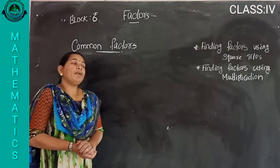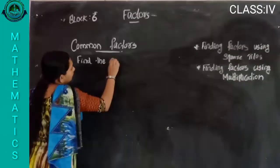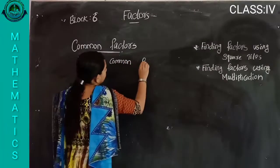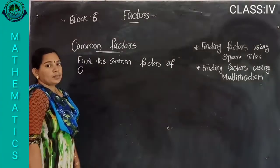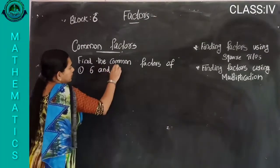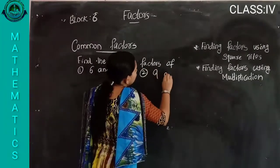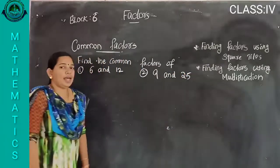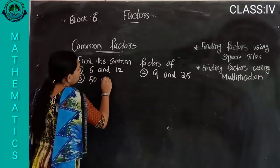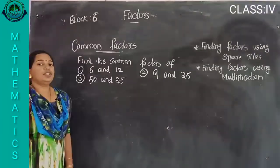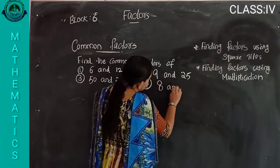Write the next questions. Find the common factors of: first, six and twelve; second, nine and twenty-five; third, fifty and twenty-five; fourth, eight and twenty-four.